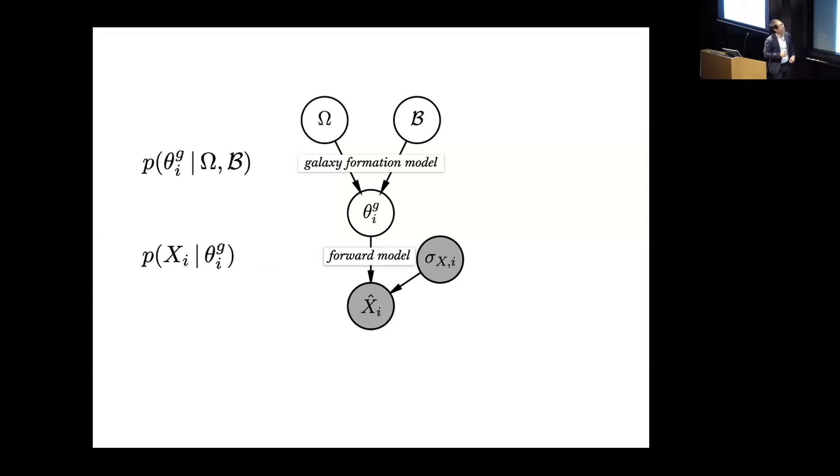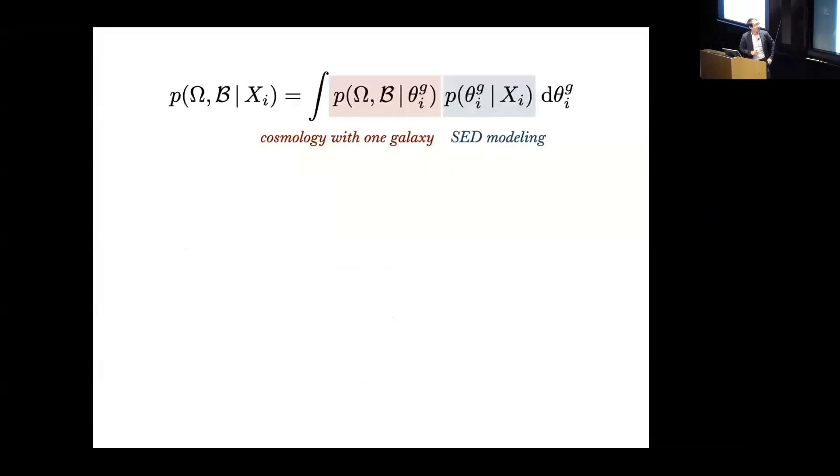We can rewrite each of these steps as these following distributions. The first is the galaxy formation model which we can write as the distribution of galaxy properties given the input parameters, and then the forward model is the distribution of the observable given the properties. Then when we're inferring this posterior here, the posterior of the input parameters given the photometry, we can write that ultimately becomes just solving the inverse problem of this forward model. So we can write this as this following expression based on these distributions.